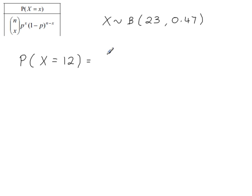To apply the formula, this first part N choose X - N is the number of trials, so that's 23. And X is this value here, 12. That's how many successes we're looking for.